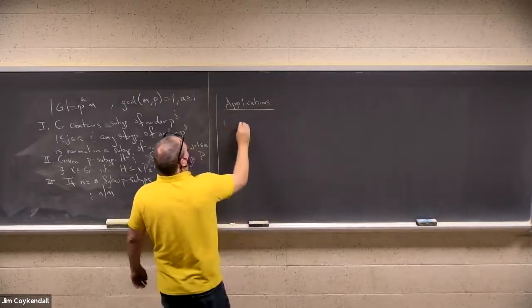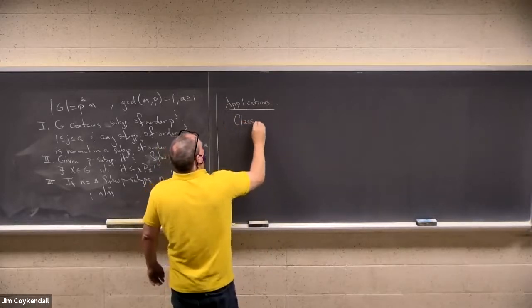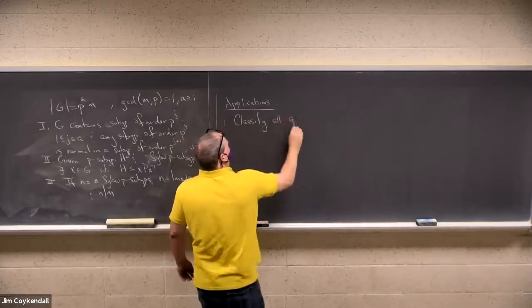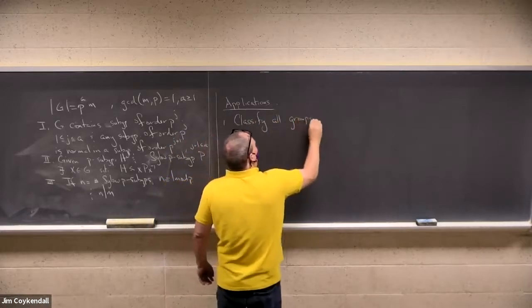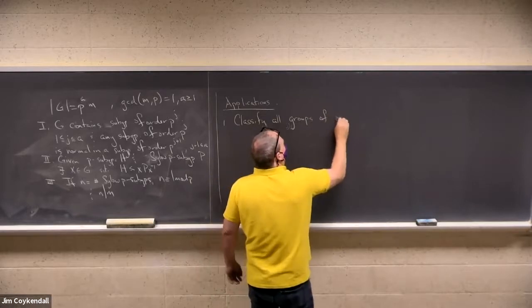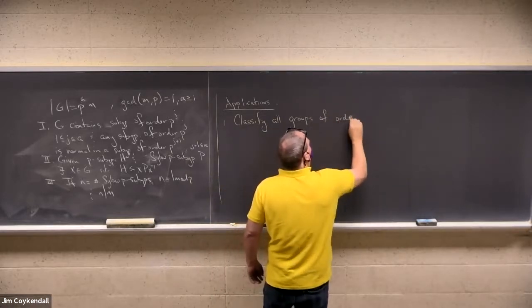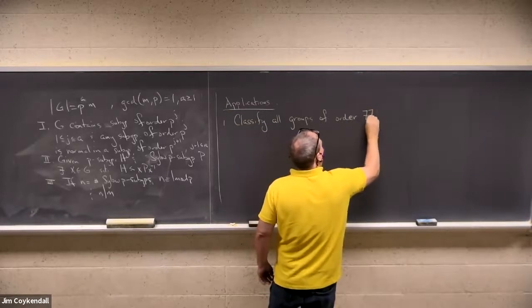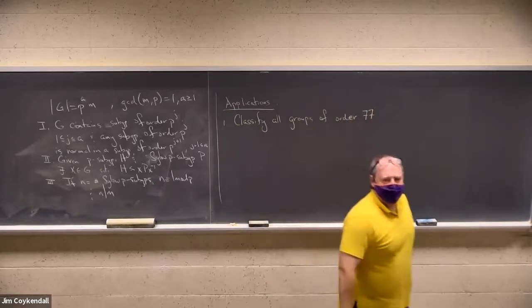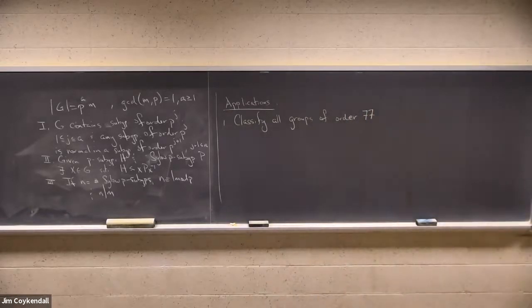Application number one: classify all groups of order 77. How many of them are there? Well, who knows? That's what we're here to figure out. Let me point out, this is kind of a classical problem in finite group theory. How many groups of order P are there, where P is a prime? There's only one, up to isomorphism.